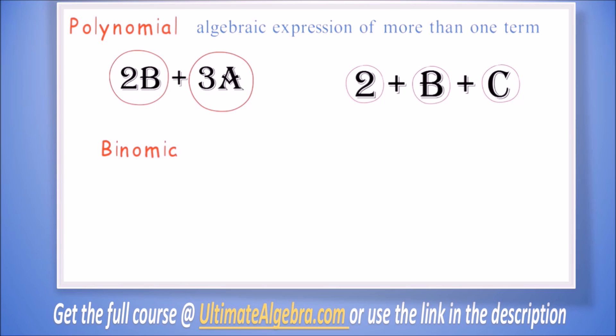A polynomial of two terms is a binomial. Example: for 2b plus 3a, we have exactly two terms, therefore it is a binomial. Also, 5x plus 4y is a binomial because it has two terms.